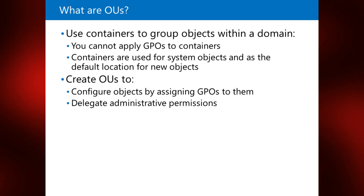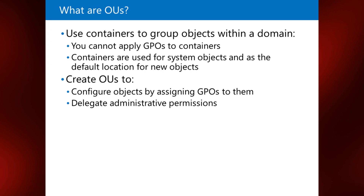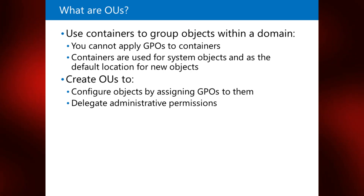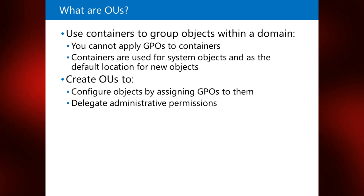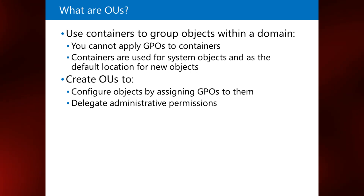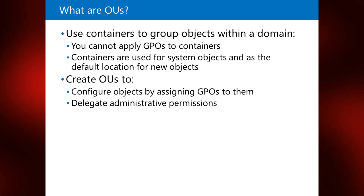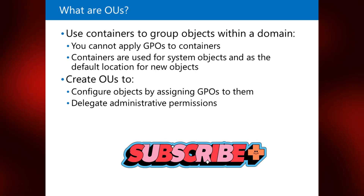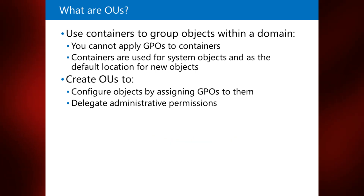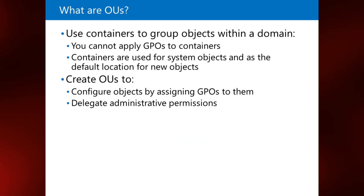You can create new OUs in ADDS by using Active Directory Administrative Center. There are two reasons to create an OU. First, to group objects together to make it easier to manage them by applying GPOs to the whole group. When you assign GPOs to an OU, the settings apply to all the objects within the OU. GPOs are policies that administrators create to manage and configure settings for computers or users.